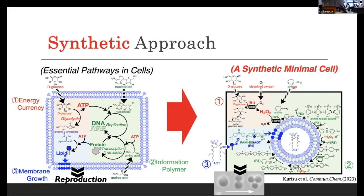Very recently, I have succeeded in constructing such a system. I call it the synthetic minimal cell system. This illustration is the overview of the chemistry. This system has three units: energy currency unit, information polymer unit, and membrane unit. And coupled with such a chemical system, they showed recursive reproduction. Today, I will talk about my system.